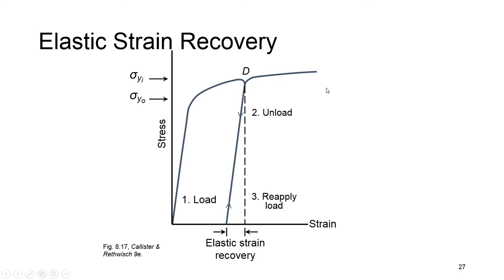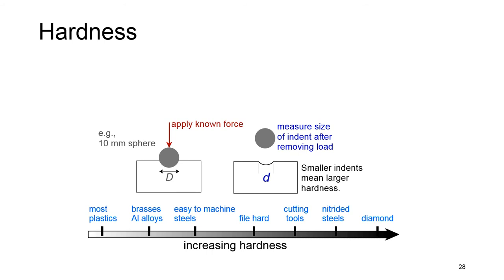Another mechanical property that needs to be defined is hardness. If you try to indent the surface of a material, different materials won't behave the same. A resistance to permanently indenting the surface is called hardness. A large value of hardness means there is resistance to plastic deformation or cracking in compression. If there is resistance, the value of hardness will be higher.